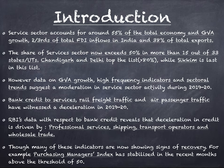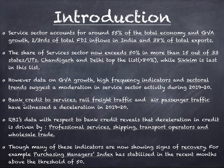What are these high-frequency indicators? First is bank credit to services — how much credit is flowing from banks to the services sector. Second is rail freight traffic — goods trains, separate from passenger trains. Third is air passenger traffic. These three are called high-frequency indicators because their data comes out very quickly and frequently. Bank credit to services, rail freight traffic, and air passenger traffic all witnessed a deceleration in 2019-20.